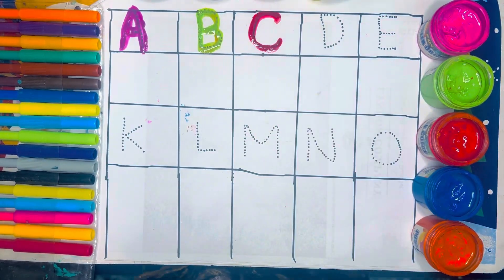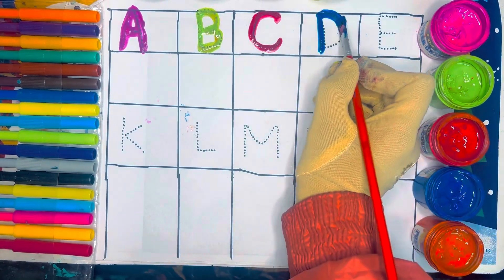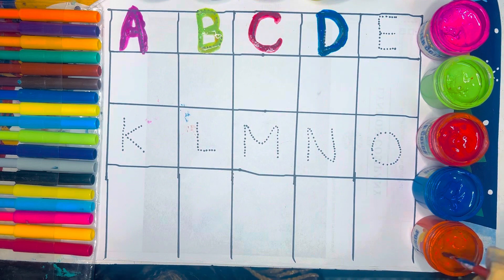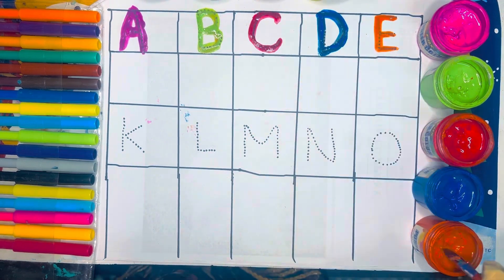C, C for cat, blue color. D, D for dog, orange color. E, E for elephant.